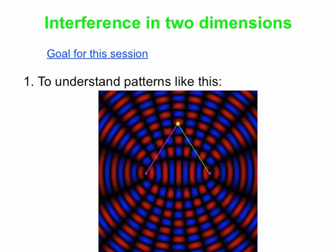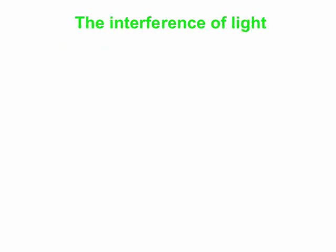Let's start by talking about some general things about the interference of light. Basically anything we say about light you can also say about other waves, such as sound waves. And for a long time there was a dispute about what light was — was it made up of particles?